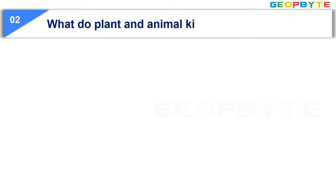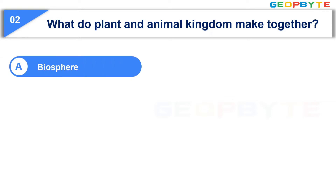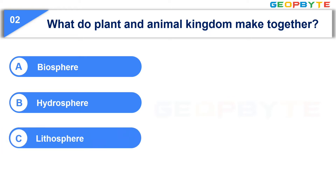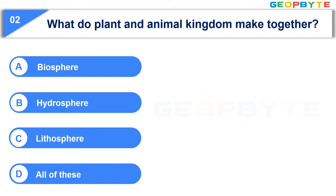Moving to the second question: What do plant and animal kingdom make together? Option A: Biosphere. Option B: Hydrosphere. Option C: Lithosphere. Option D: All of these. Your time starts now.